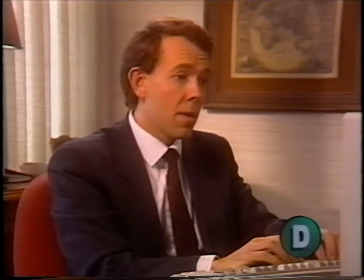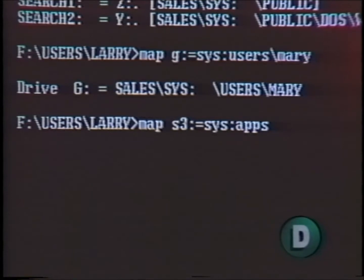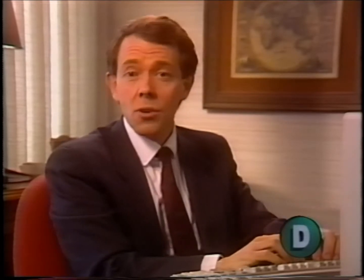But what if I want to create a search drive which can look for word processing applications no matter where Mary is located? I simply type: map s3: = sys:\apps\wp. Mapping search drives is similar to the DOS path command. In fact, the map command sets up the network search drive in the path environment because DOS expects to find them there.